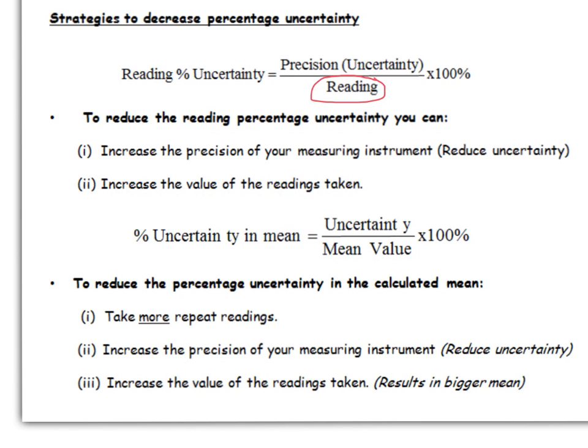To reduce percentage uncertainty in the calculated mean, one of the things you could do is take more repeat readings. So when you average them in theory, you've got a more accurate result. You should be closer to the true value or have smaller uncertainty. You can again increase the precision of your measuring instrument, and you can increase the value of readings taken, because this would make your mean value bigger. Just like before, using 200 instead of 2, for instance. But you have to bear in mind what you can safely use with the equipment that you have available.